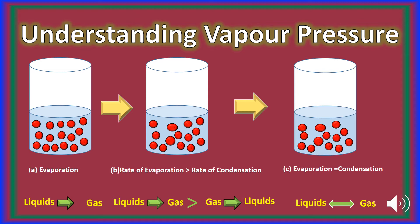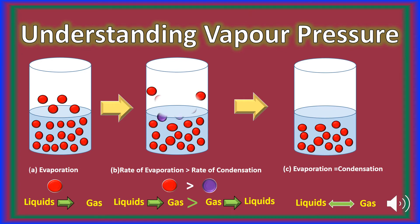Consider a liquid in a closed container. Initially, the liquid is changing into the gaseous state — evaporation is the change of liquid into the gaseous state. Here the red circle represents the evaporation process starting. At the beginning, the rate of evaporation will be fast whereas there is no condensation. As you can see in the second diagram, the rate of evaporation is greater compared to the rate of condensation.